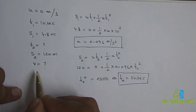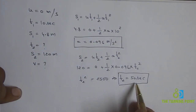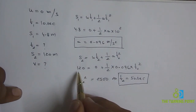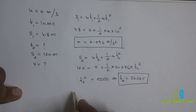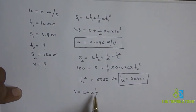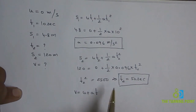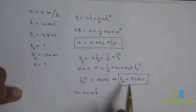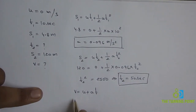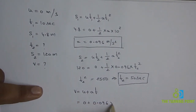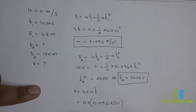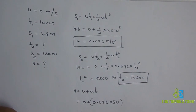Now we need to find the final velocity with which the ship will strike the water. We know initial velocity u = 0, acceleration a = 0.096 m/s², and the time to travel 120 meters is t2 = 50 seconds. Using v = u + at: v = 0 + 0.096 × 50 = 4.8 m/s. So the final velocity is 4.8 m/s.